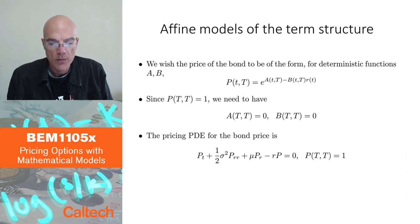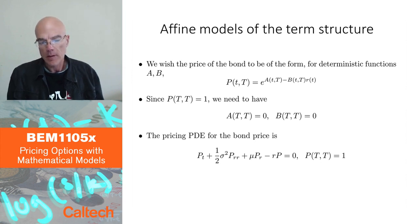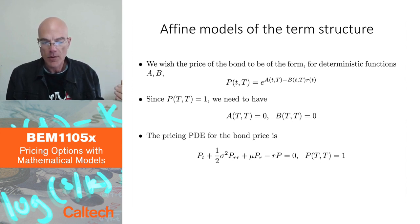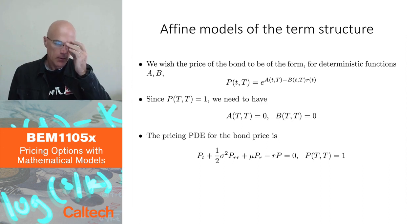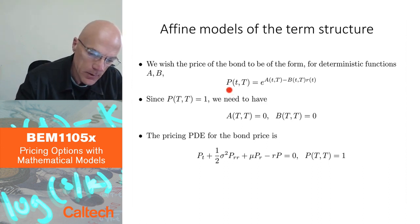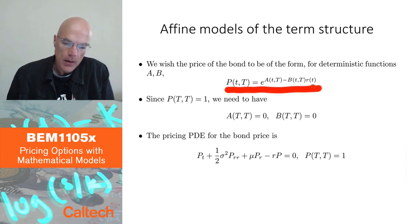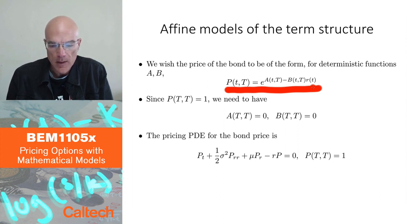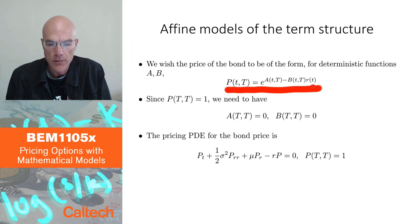We are going to say, well, the bond price in a deterministic world is just the exponential of the interest rate times t — so a linear function of the interest rate. Maybe in these random models something similar will happen. We are hoping that the bond price might be expressed as an exponential of a linear function of the interest rate, or the short rate.